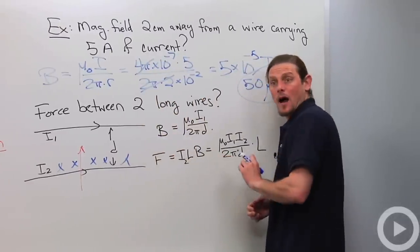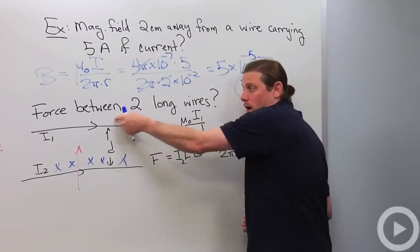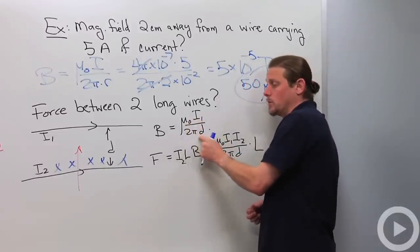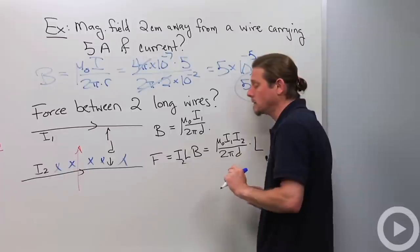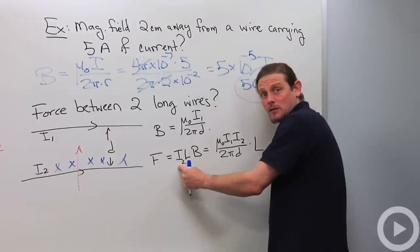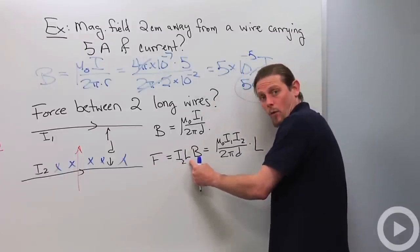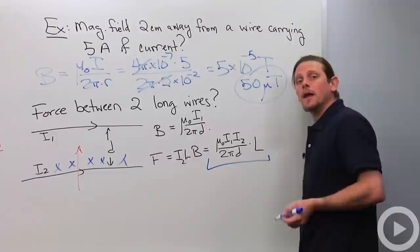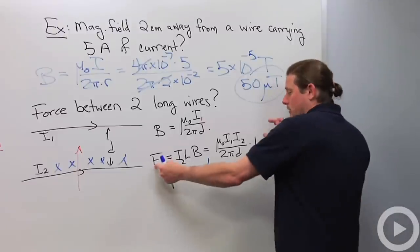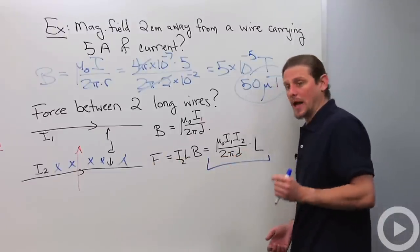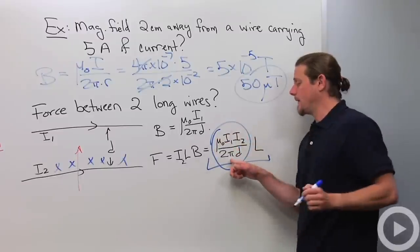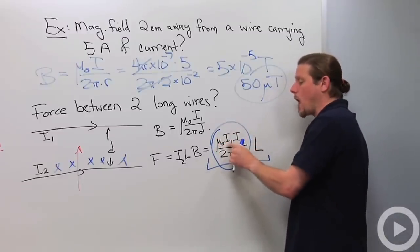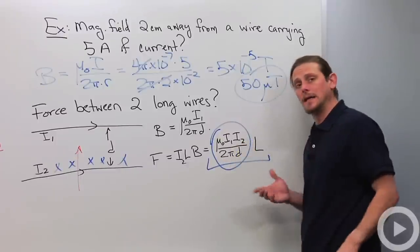The magnetic field, a distance d away from wire with current I1, is μ0I1 over 2πd. Okay? The force is the second current times the length of wire times the magnetic field, which I can rearrange like that. Now, usually what people do is they'll divide by the length, and they'll get a force per unit length that's given by this formula. Notice that we got μ0, we get the product of the two currents, and then we divide by 2πd.